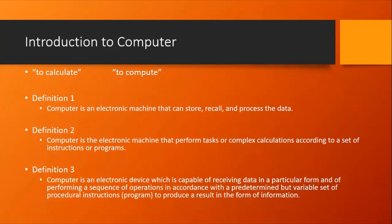Definition 3 — let us try to understand where we try to put most of the information. Computer is an electronic device which is capable of receiving data in a particular form and of performing a sequence of operations in accordance with the predetermined but variable set of procedural instructions to produce a result in the form of information. You may find that this particular definition is very textbook-ish. Let us try to understand what it describes. The computer requires data and instructions in order to calculate something.